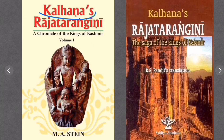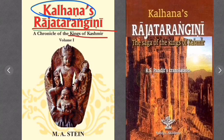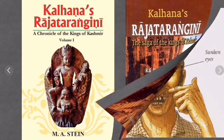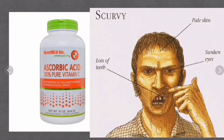Next: Raja Tarangini. Raja Tarangini means 'the river of kings.' It was written by Kalhana, who belongs to the Lohara dynasty. Raja Tarangini is about the kings of the kingdom of Kashmir. So the author of Raja Tarangini is Kalhana.